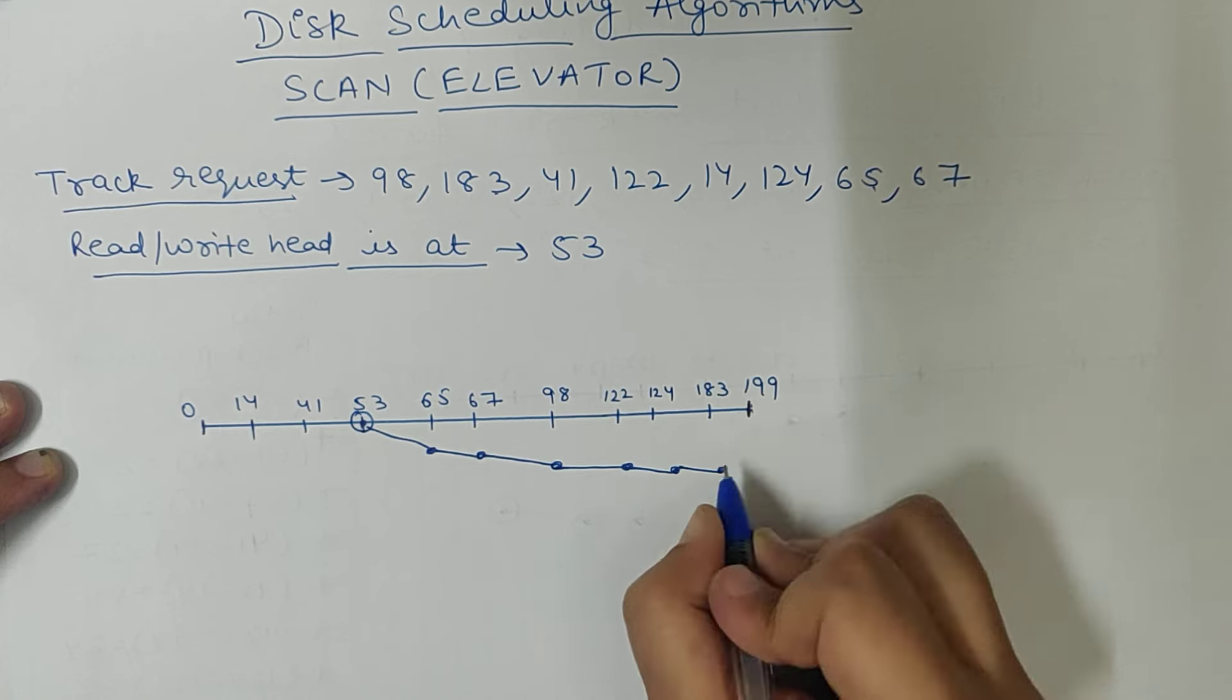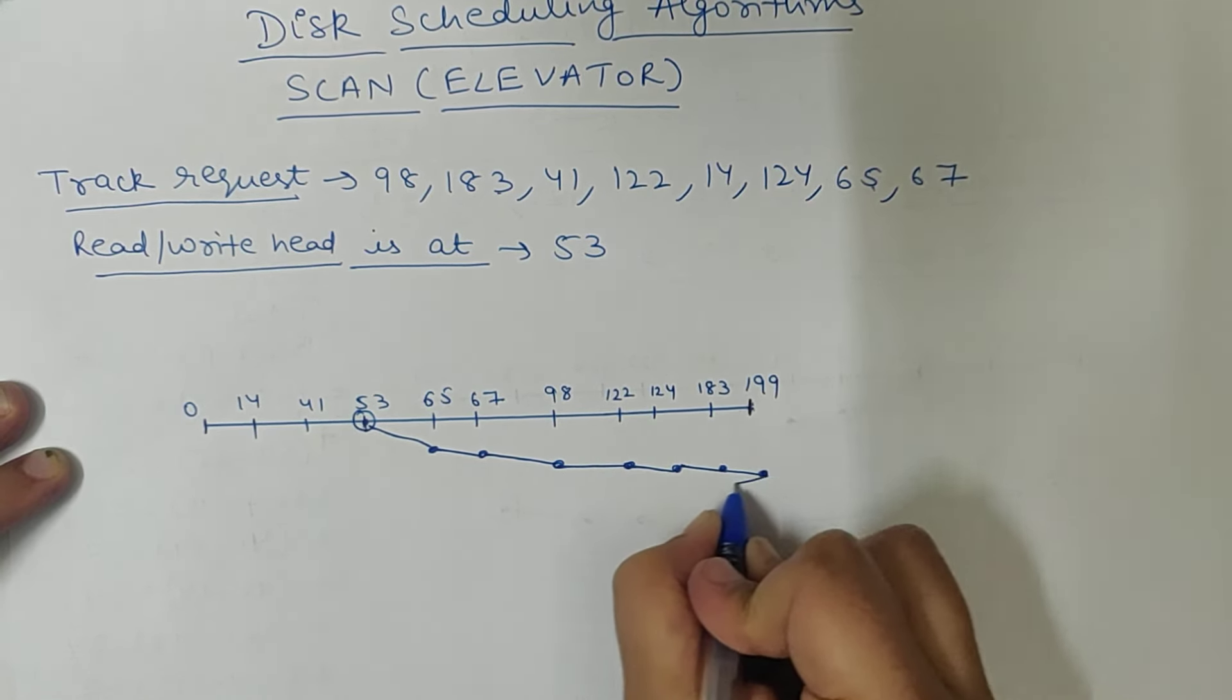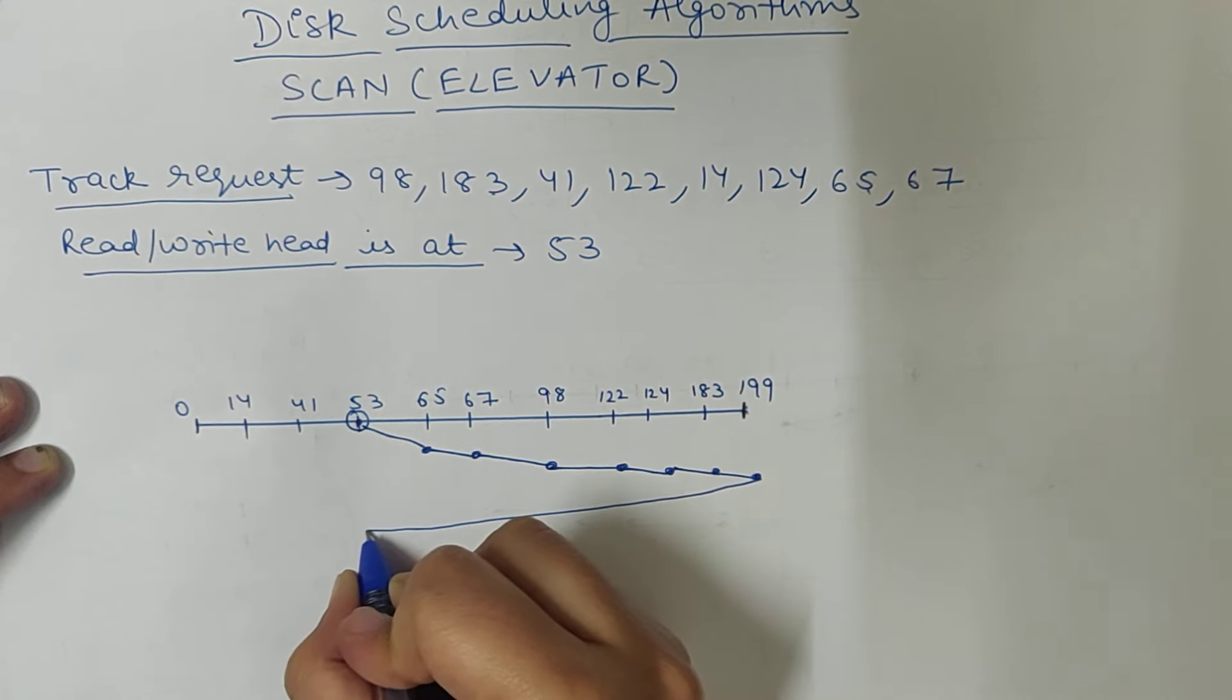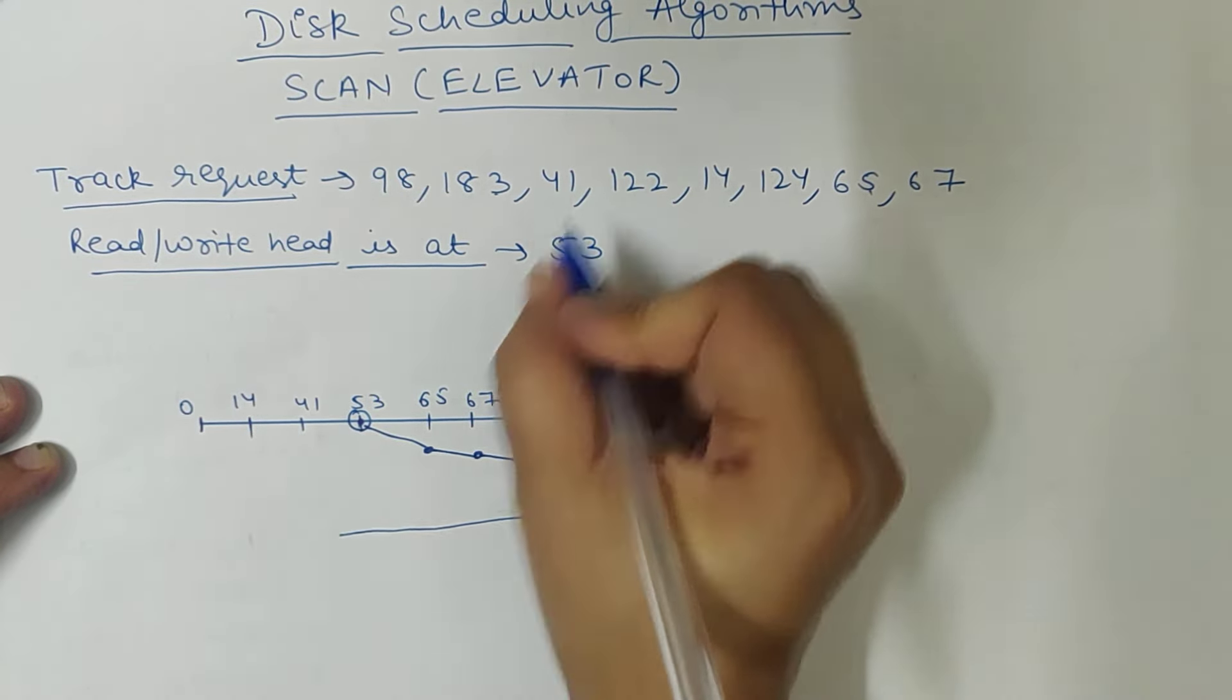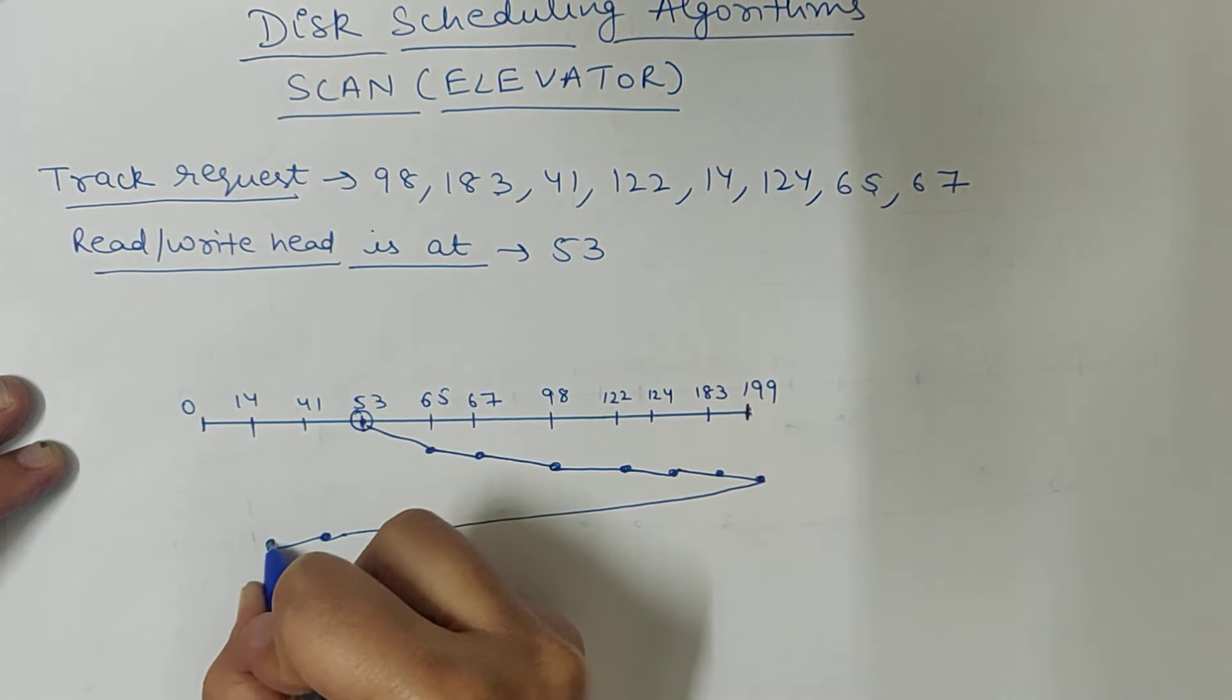And then there is no request after 183, but still scan is the end of the track. We have to go to the end of the track, then we will go to reverse. Then our request is 41, then we will fulfill it. That's it. This is how scan works.